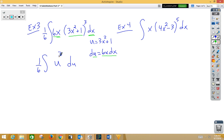6x dx became my du and my new function now is u cubed. Using the reverse power rule, I get u to the fourth over four plus c times one sixth, which would be, now we know it's not u, we know it's 3x squared plus 1 to the fourth over twenty-four plus c.